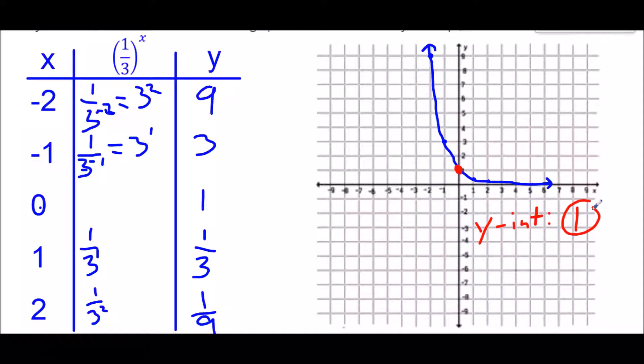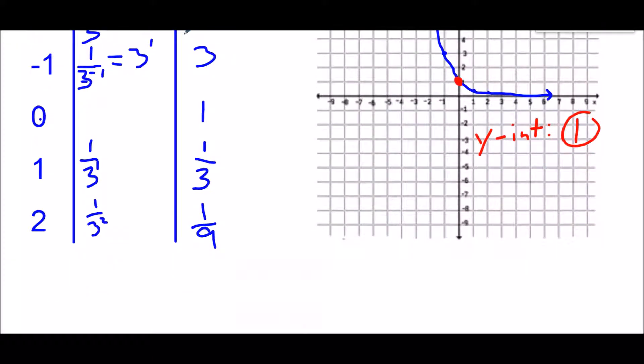Similar to example problem number 1, there is no restriction for the x's or our domain. It will continue all the way left and all the way right for infinity. So our domain is once again all real numbers.